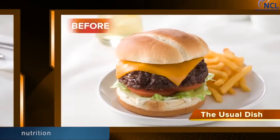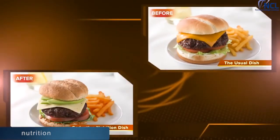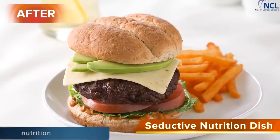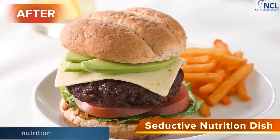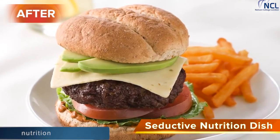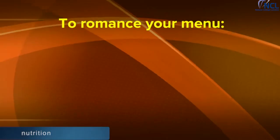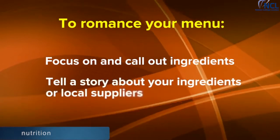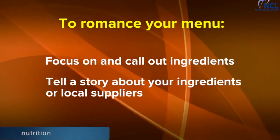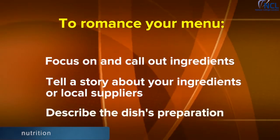We start with top dishes because that is where the biggest opportunity is to help people eat healthier without shouting 'nutritious.' For example, the regular cheeseburger with fries becomes a California pepper jack burger served on a slightly smaller whole grain bun with crispy sweet potato fries, saving nearly 200 calories. We also look at ways to tell a story or provide delicious descriptions — to romance your menu, focus on and call out your ingredients, tell a story about your dish, the ingredients or supplier, and describe the dish's preparation.